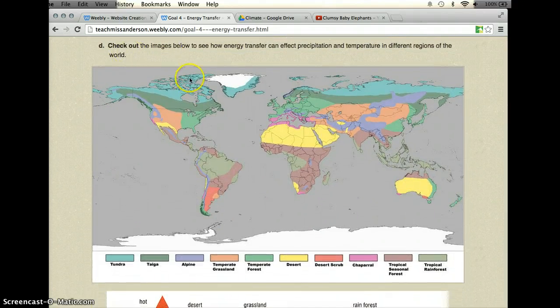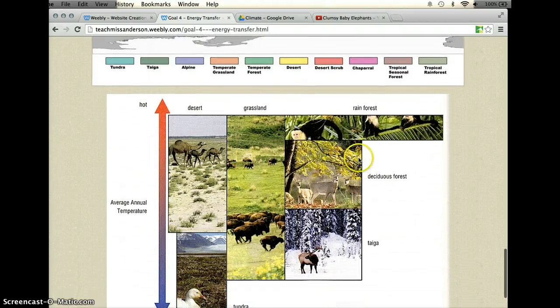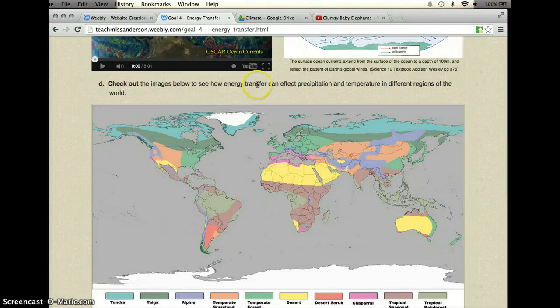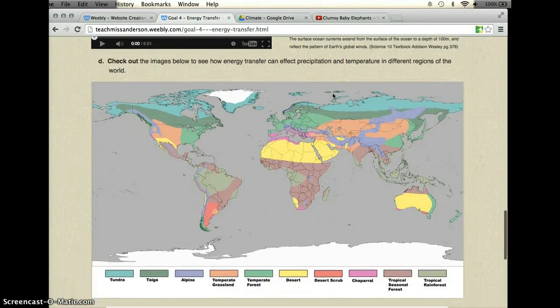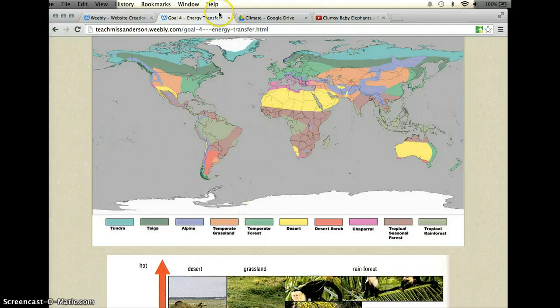Then, for section D, you're just going to look at these images here. This image here of the earth as well as this image here talking about biomes. And you're going to just see how energy transfer can affect precipitation and temperature in different regions of the world. I do want you to spend a little time just gaining some understanding as to how temperature and precipitation can affect these areas of the world. So for example, you'll see here, desert is in yellow. So you look at areas of the world that have yellow. You'll see in Australia here, there's a large section of yellow.